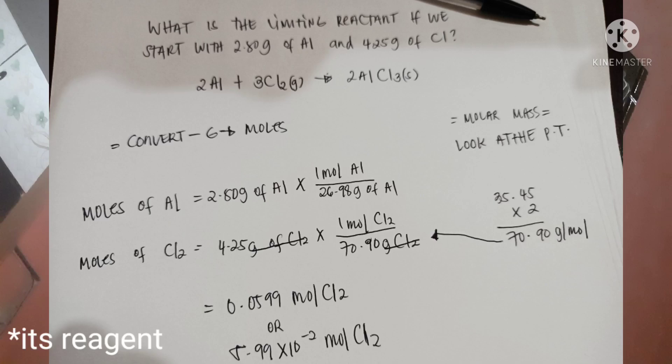Let's check it first if the reaction is balanced. If it's balanced, then we should proceed. First step is to convert first the amounts in grams to moles. Then you just write it down. Moles of aluminum is equal to the given 2.80 grams of aluminum. Multiply this to molar mass of aluminum.